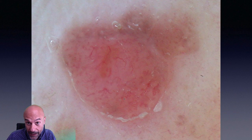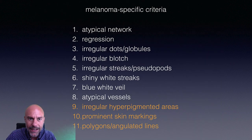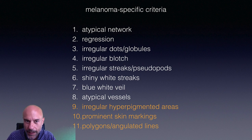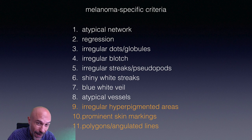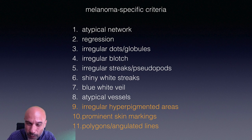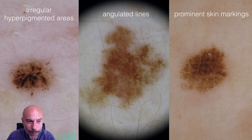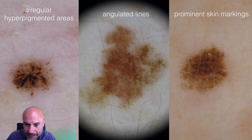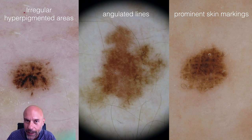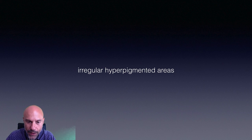These are the main melanoma criteria. Recently, a few additional criteria have been validated as specific for melanoma, especially important for very early melanomas — melanomas in situ or very early invasive melanomas. The most important new criteria are: irregular hyperpigmented areas visible on the left image, angulated lines which are quite similar to the rhomboidal structures of lentigo maligna, and finally prominent skin markings.